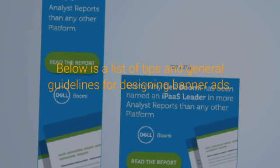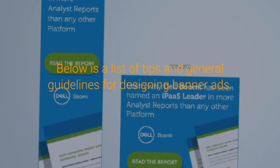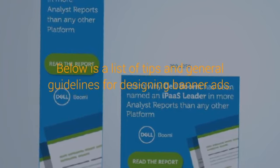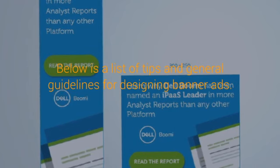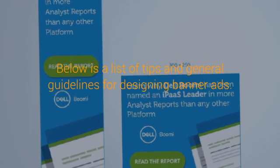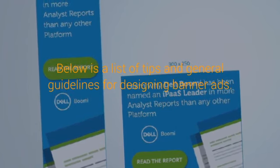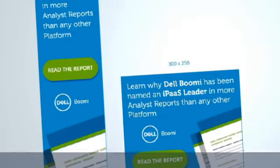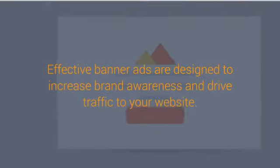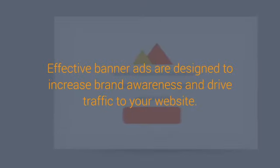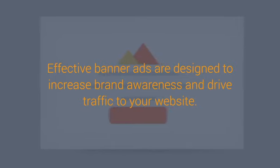Tip 1: Use the Most Effective Standard Banner Sizes. According to Google AdSense, the most successful standard banner sizes are: 728×90px Leaderboard, 300×600px Half Page, 300×250px Medium Rectangle, and 336×280px Large Rectangle.